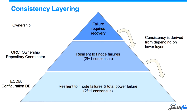The ORC is resilient to F node failures. It's not resilient to power failure, but that's not a problem — if we have a power failure, we can reconstruct it from previously persisted information. For the ownership layer, if we have a failure there, we will need to do recovery. So if we have a single node failure in the ORC, everything continues working with no recovery needed. Same for ECDB. But for ownership, we need to perform recovery.